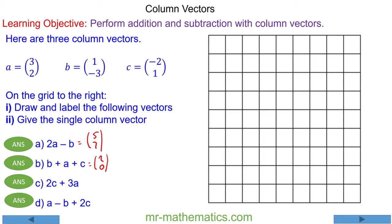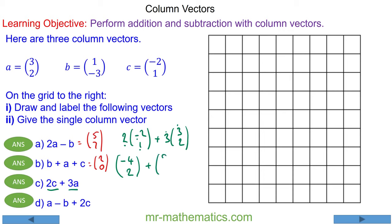For question c we have 2c: 2 lots of negative 2 and 1, plus 3a which is 3 lots of 3 and 2. 2 lots of negative 2 is negative 4, and 2 lots of 1 is 2. Then we have 3 times 3 which is 9, and 3 times 2 which is 6.